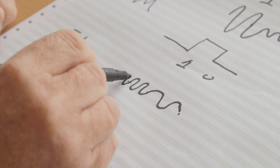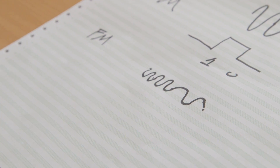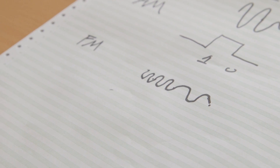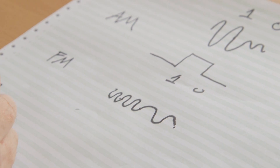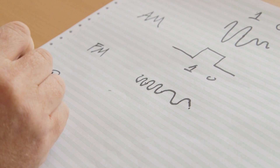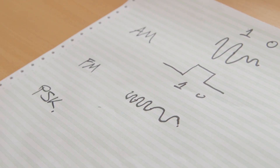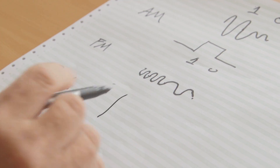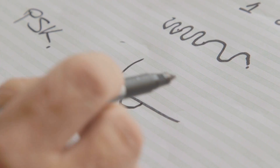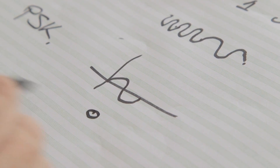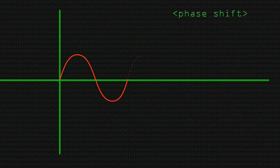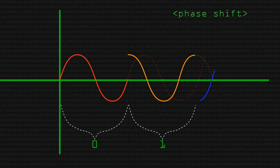With frequency shift keying, we do the same thing with frequency. The frequencies tend to be much closer together than illustrated, but we can represent our ones and zeros that way. And then finally, phase shift keying — we have a signal, and we might use that to represent a zero, then shift the phase slightly to get a one, shifting the phase of the signal each time we want to represent a different bit.